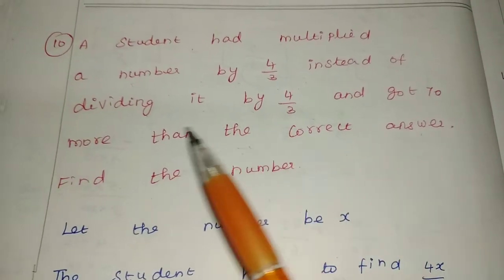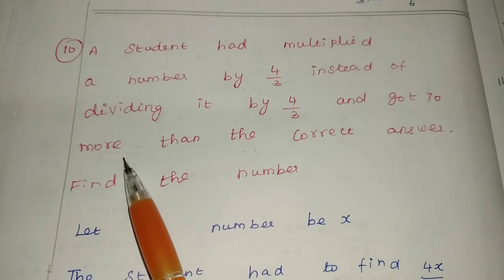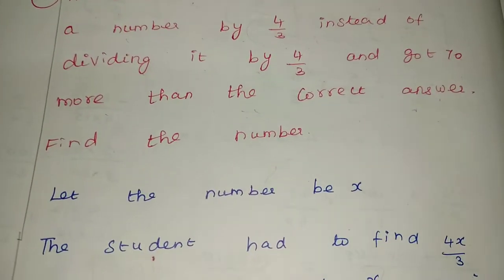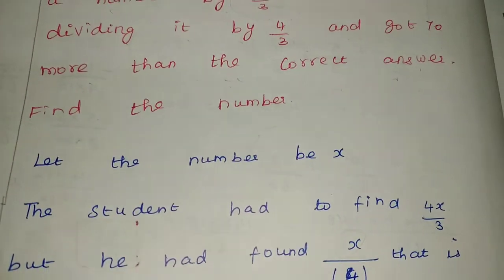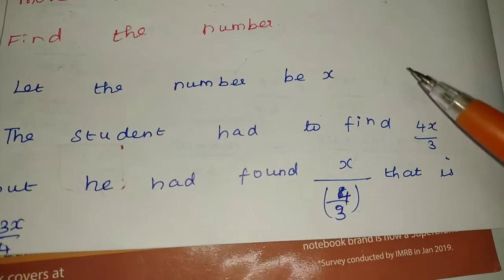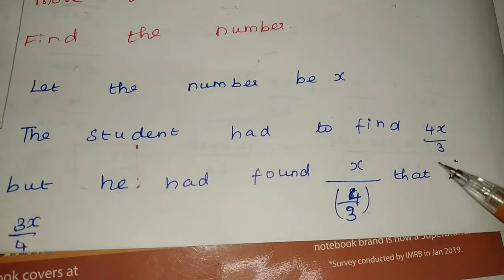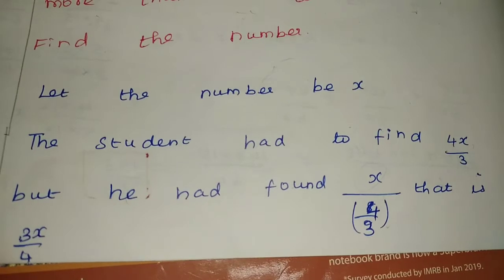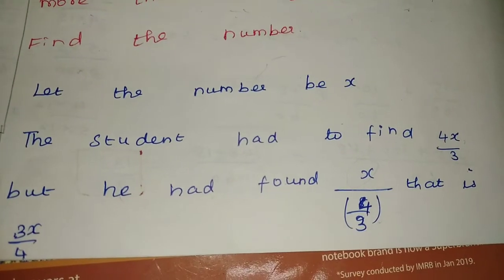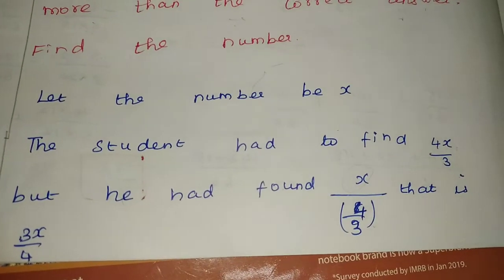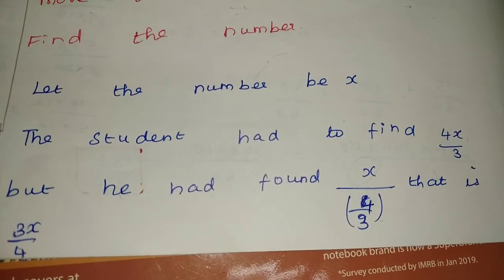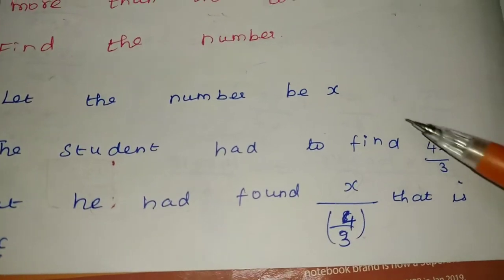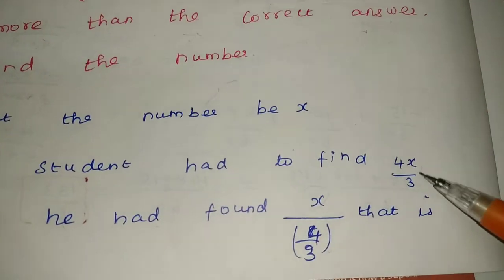He got 70 more than the correct answer, and we have to find the number. Here, 4/3 into x means 4x/3.